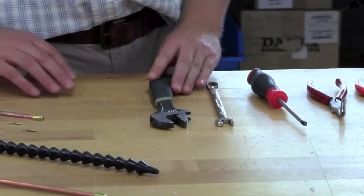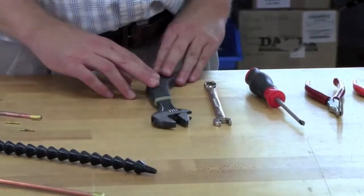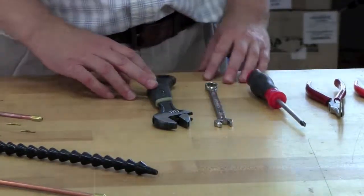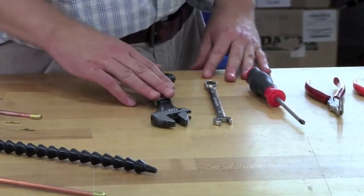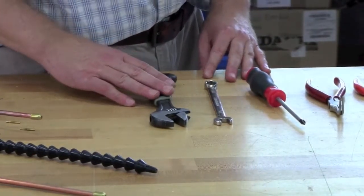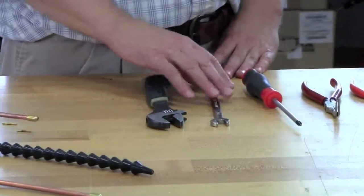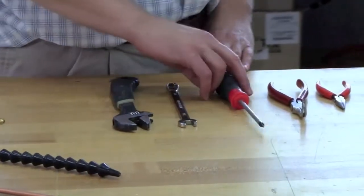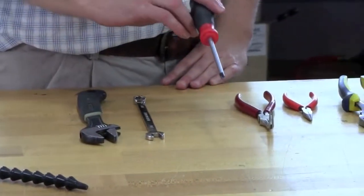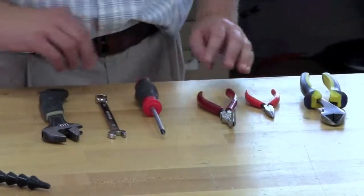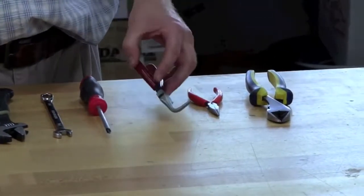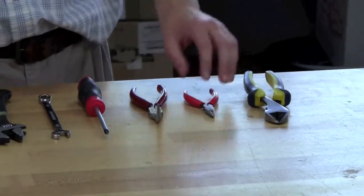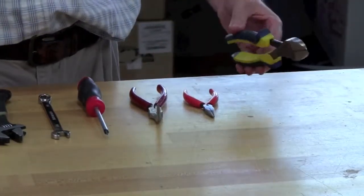Before we change the nozzles, let's go over a few tools that I'd recommend having on hand just to make the job easier. It would be a good idea to have an adjustable wrench, a 7-16 wrench, a number two Phillips screwdriver, a couple different needle nose pliers, you might want an angled needle nose or a straight one, and cutters.